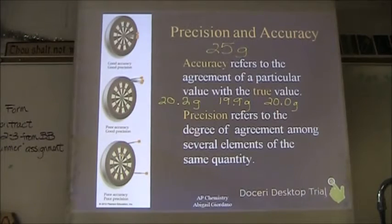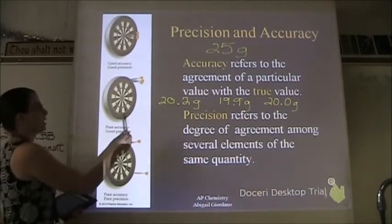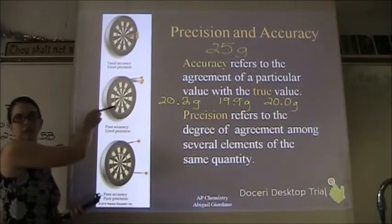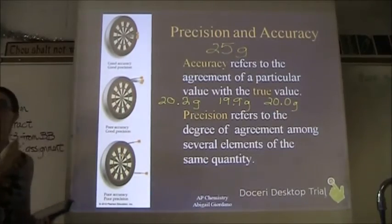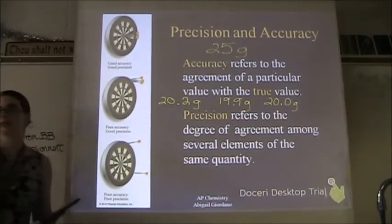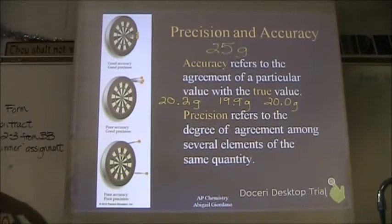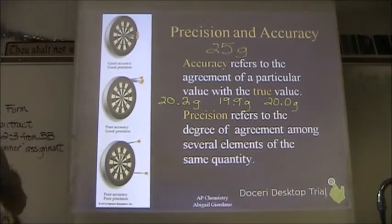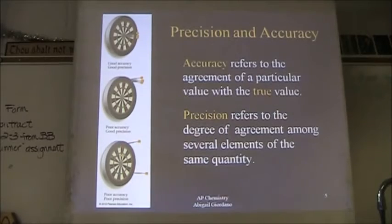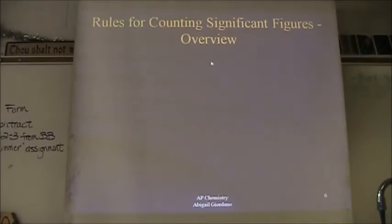Those are fairly precise measurements, but are they accurate? No, they're not. So this would be an example of this kind of situation. Close together, close to each other, but not on the mark. This would be a situation where you have good accuracy and precision. This would be poor for both.